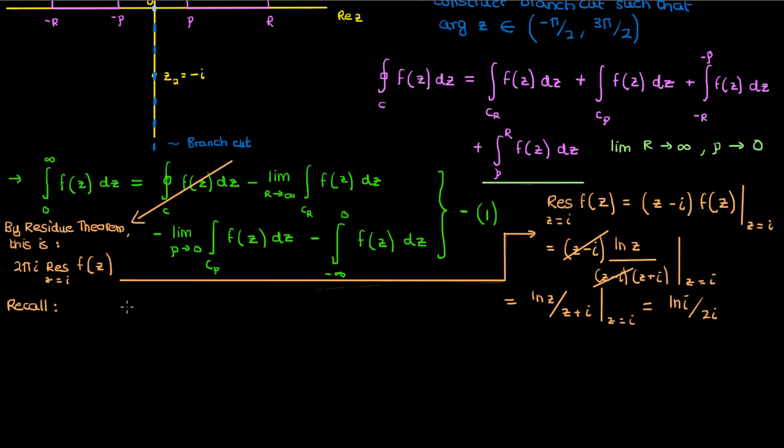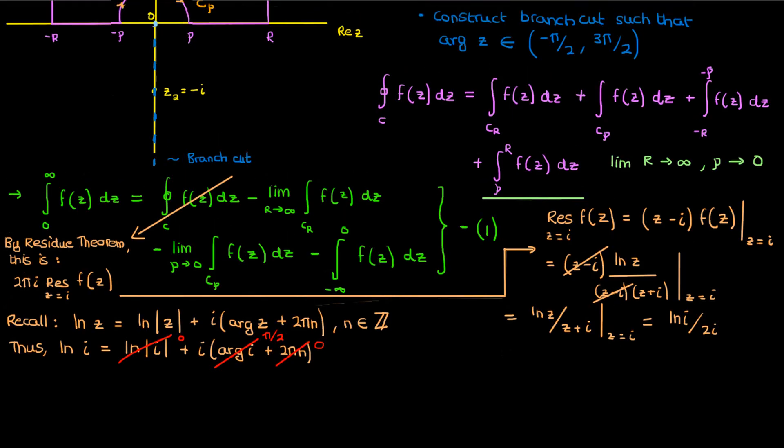Recall from the previous video that the natural log of a complex number is the natural log of its modulus plus i times the argument of that complex number plus 2 pi n where n is some integer. So in our case the natural log of i is just the natural log of the modulus of i. The modulus of i is 1, so its natural log of 1 is just 0, plus i times the argument of i plus 2 pi n. The argument of i is pi by 2, and I can also ignore the 2 pi n. Do you know why I've done that?